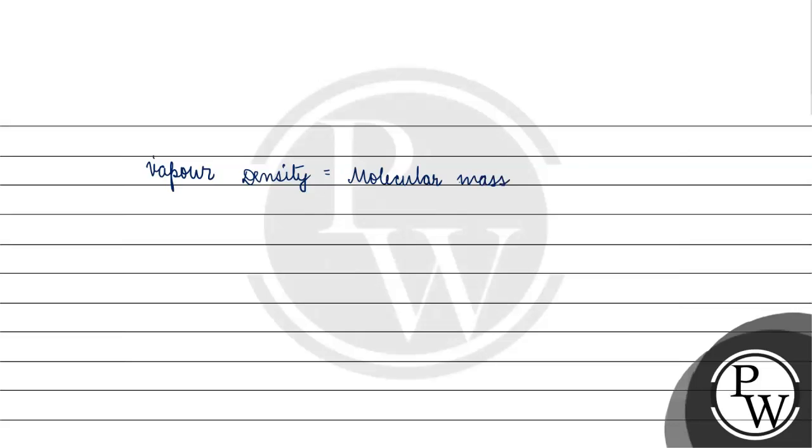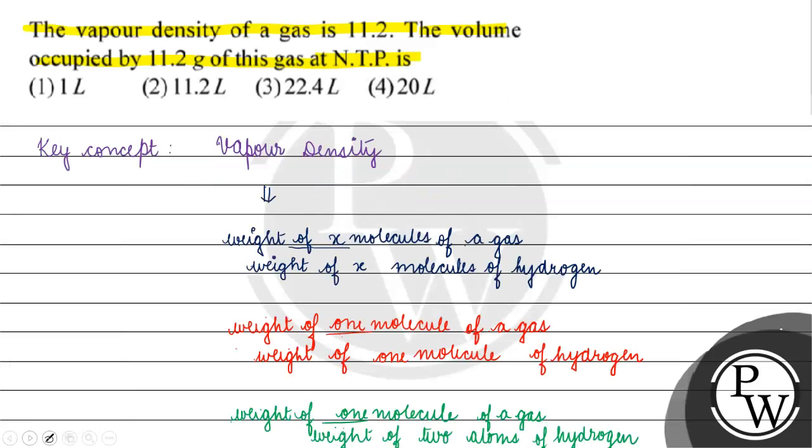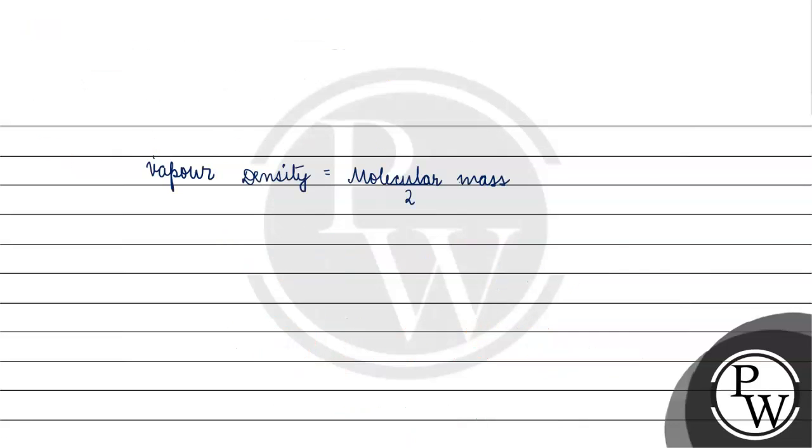Now, let's see in this question, vapor density has been given as 11.2. How much molecular mass will be? Molecular mass will be 2 into 11.2. How much will it be? 22.4 gram per mole.